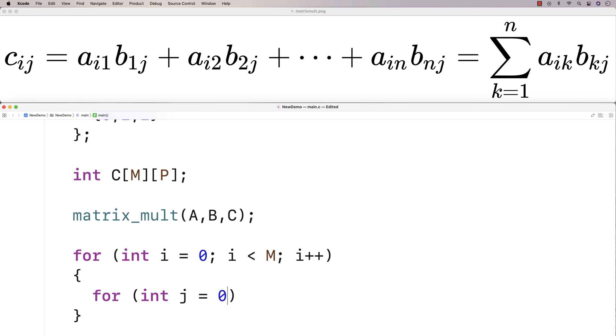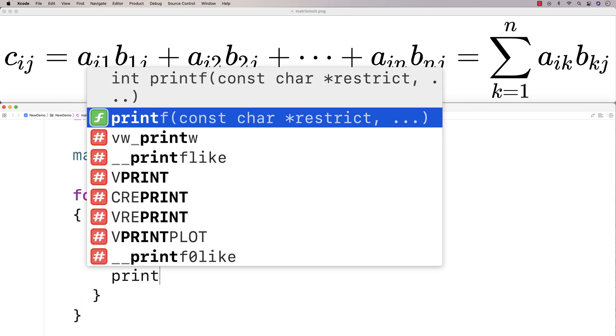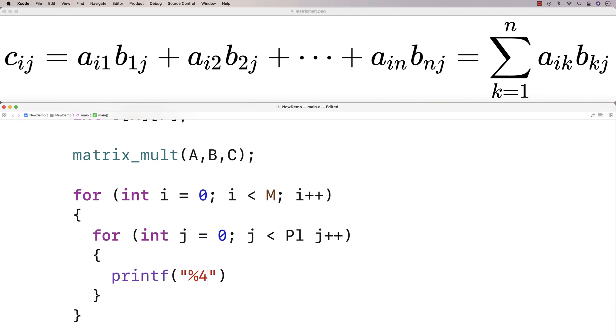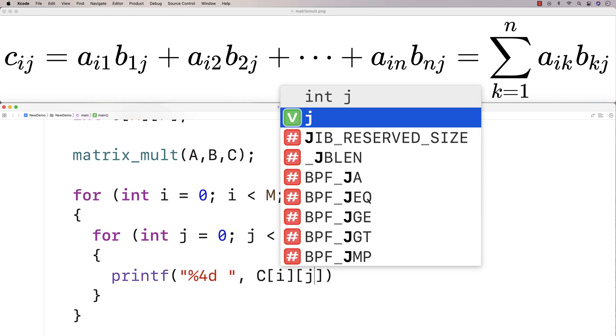And then for (int j = 0; j < P; j++). And then here I'll say printf("%4d ", C[i][j]).